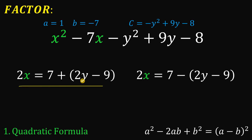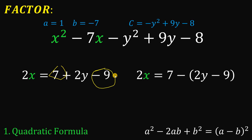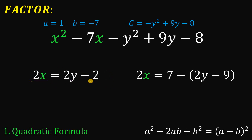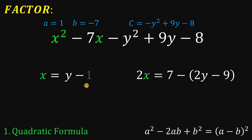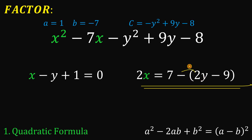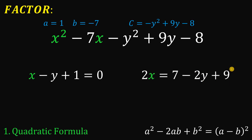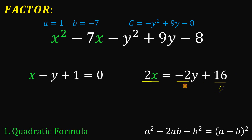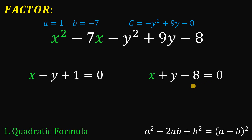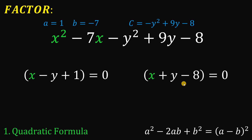For the first case, we have 7 plus 2y minus 9. Combining 7 and negative 9 gives negative 2, so we have 2x equals 2y minus 2. Since all coefficients are even, dividing by 2 gives x equals y minus 1. Setting this equal to zero gives our first factor. For the second case, distributing the negative sign gives 7 minus 2y plus 9, which equals 16 minus 2y. Dividing by 2 gives x equals negative y plus 8, and equating to zero gives our second factor.